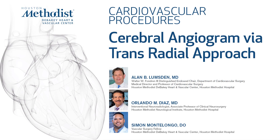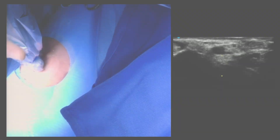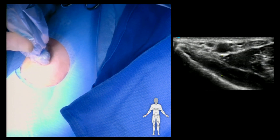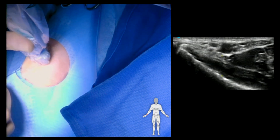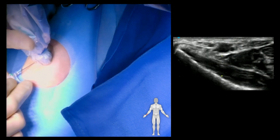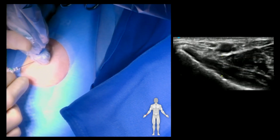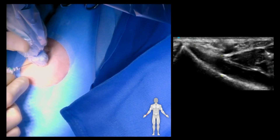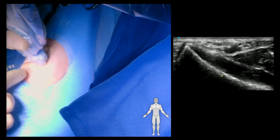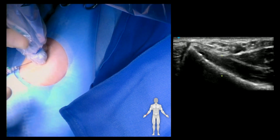In this video we're going to demonstrate how to do a four-vessel cerebral angiogram via a transradial approach. We'll skip through the transradial access so you can see radial artery cross section. We use a standard radial artery access kit with a radial artery cocktail to prevent vasospasm. In this case, this is the right wrist that we're approaching through.